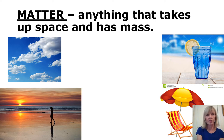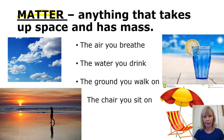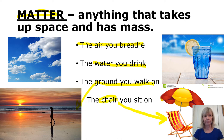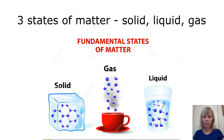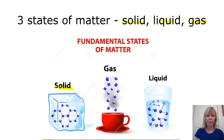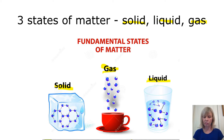It's important that we define what matter is. Matter is anything that takes up space and has mass — it's essentially everything around us: the air we breathe, the water we drink, the ground we walk on, and the chair you sit on. There are three forms of matter: solid, liquid, and gas. At the molecular level, atoms or molecules in a solid are closer together, in a gas they're farther apart, and in a liquid they're somewhere in between.